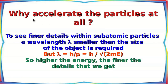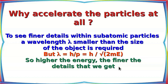One question that may arise is: why accelerate the particles at all? If we want to see the finer details within subatomic particles, we need a wavelength lambda much smaller than the size of the object. Lambda can be written as h over p, where p is the momentum of the particle and h is Planck's constant. In terms of mass and energy, this would be h over square root of 2ME. Therefore, higher the energy, the finer will be the details we can observe.